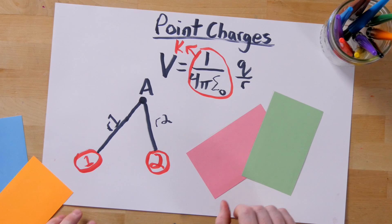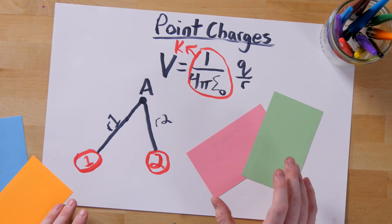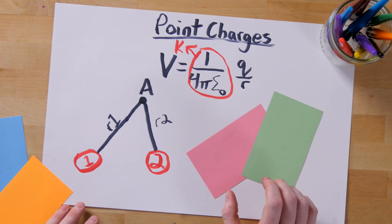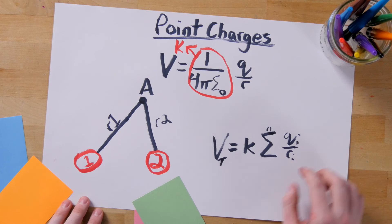But this isn't just limited to two point charges. We can do it for 3, 4, 5, and onward to infinity. As long as you account for the amount of charge present and the distance to each charge, you'll be able to calculate the electric potential at any point.